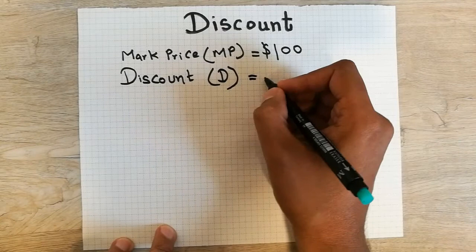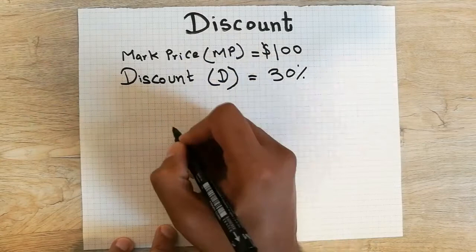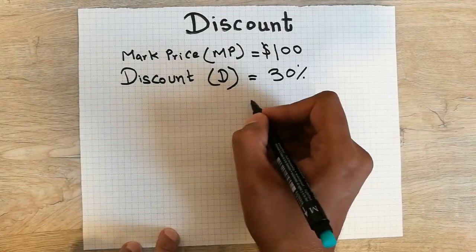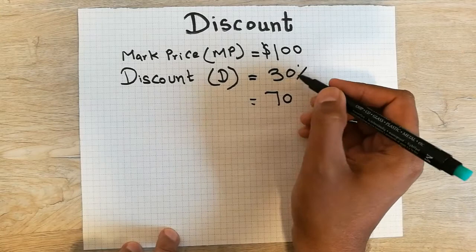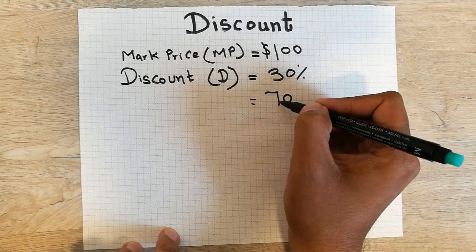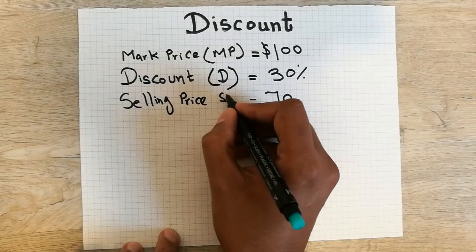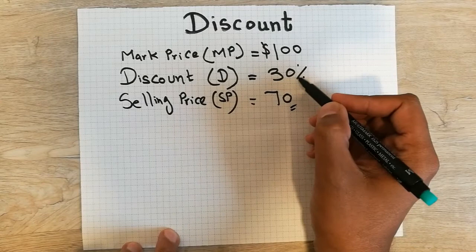The next thing is discount, which we write as D. For example, on a 100 dollar item there is a 30% discount. So 100 minus 30 is 70 — after the discount, the price of the item is 70 dollars. This 70 dollars is called the selling price, also written as SP. So: mark price is 100, discount is 30%, and selling price is 70.